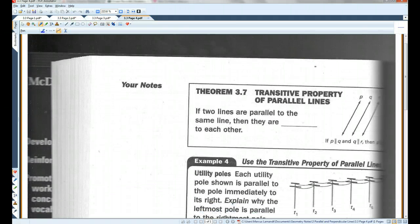Okay, transitive property of parallel lines. If two lines are parallel to the same line, then they are parallel to each other. So, for example, if this line is parallel to this line, and this line is parallel to this line, then the first line is parallel to the third line.